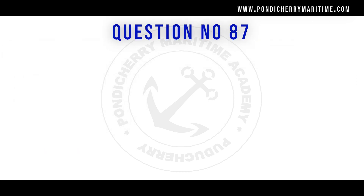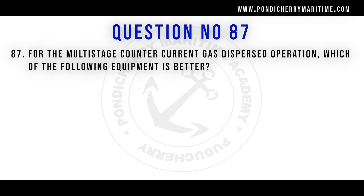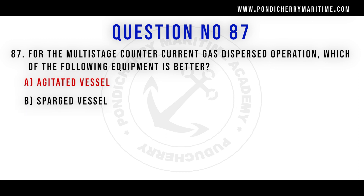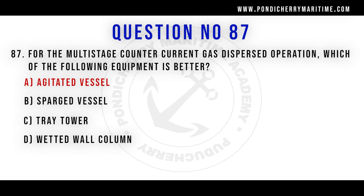Question 87: For the multi-stage counter-current gas dispersion operation, which of the following equipment is better? Option A: agitated vessel. Option B: sparged vessel. Option C: tray tower. Option D: wetted wall column. Correct answer is Option A: agitated vessel.